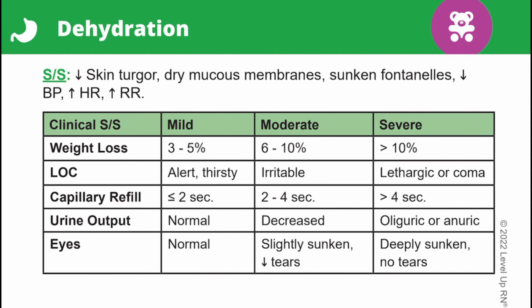Other signs and symptoms vary depending on whether the child has mild, moderate, or severe dehydration. In terms of weight loss, expect 3–5% with mild dehydration, 6–10% with moderate dehydration, and over 10% with severe dehydration. In terms of level of consciousness, the child will be alert and thirsty with mild dehydration, irritable with moderate dehydration, and lethargic or possibly in a coma with severe dehydration. Capillary refill is ≤2 seconds with mild, 2–4 seconds with moderate, and over 4 seconds with severe dehydration.